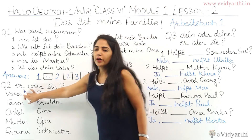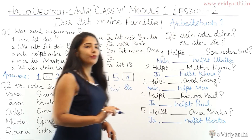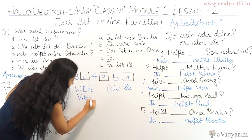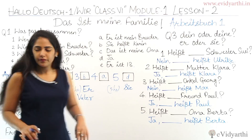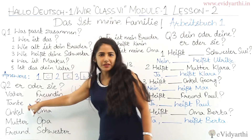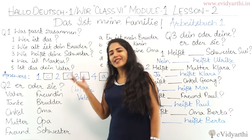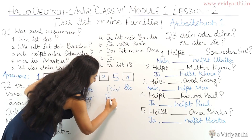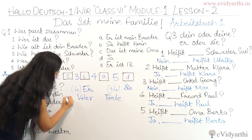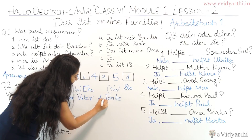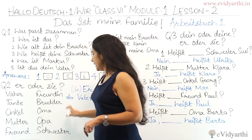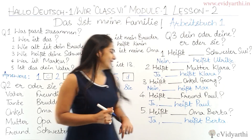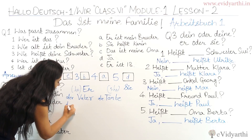For 'Vater,' father, you would obviously use 'er' — he. Then 'Tante' is aunt, so obviously 'sie' — she. Then 'Onkel' is uncle — he or she? Obviously he, so 'er' — dear uncle.